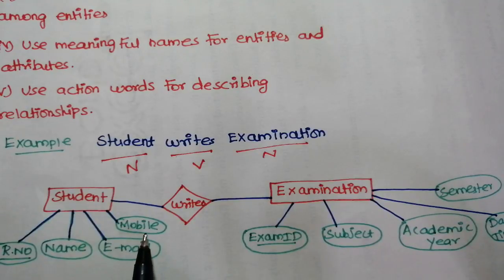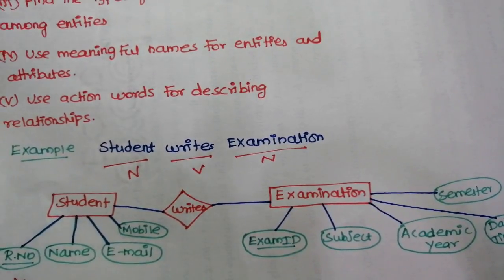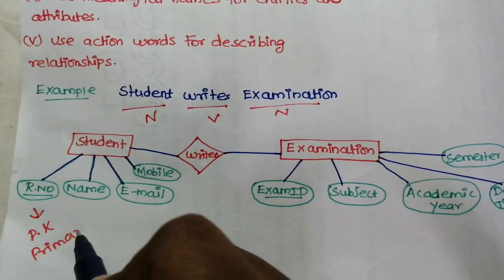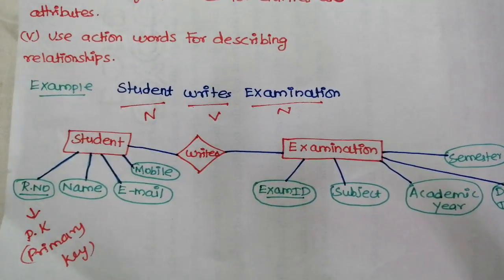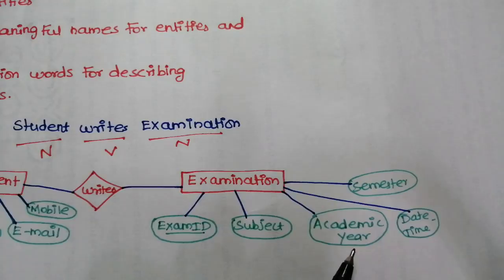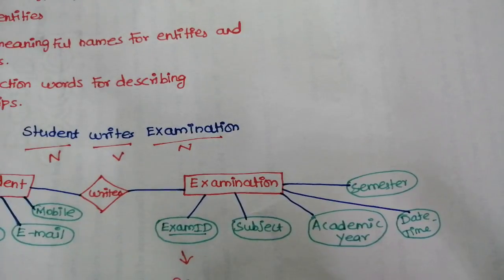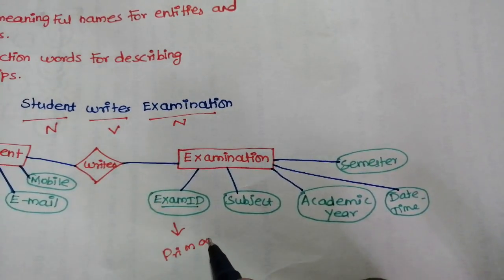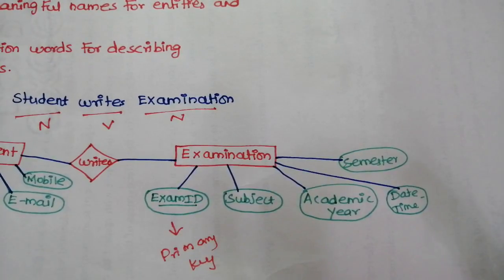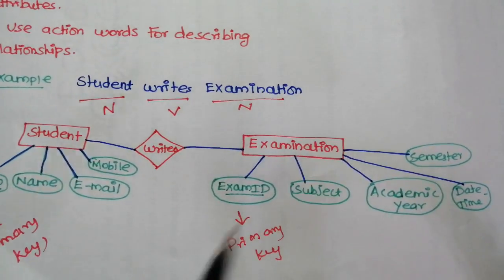Student entity attributes: roll number, name, email number, mobile — and the primary key is roll number. Examination entity attributes: exam ID, subject, academic year, date, time, semester — and the primary key is exam ID. So here we have the student entity and the examination entity connected, which is the example explained.